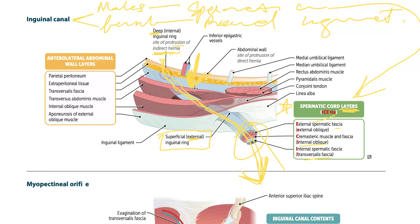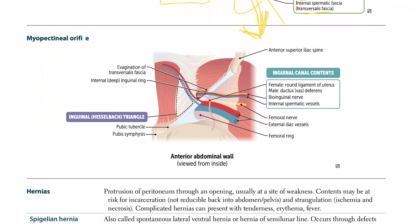There is also an association with the inferior epigastric vessels, which we'll come back to. Looking at the layers from posterior to anterior, we have: parietal peritoneum, extraperitoneal tissue, transversalis fascia, transversus abdominis muscle, internal oblique muscle, and the aponeurosis of the external oblique muscle. Moving on to the myopectineal orifice.